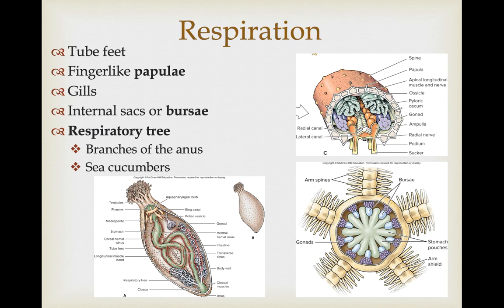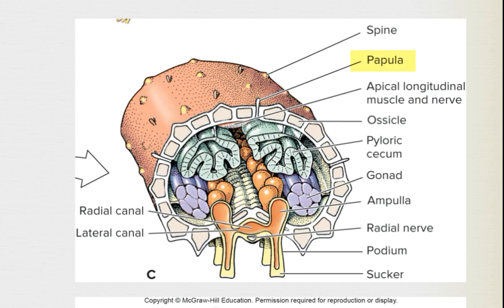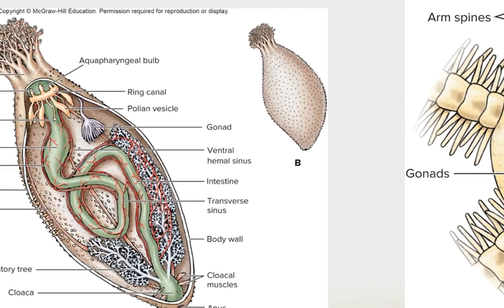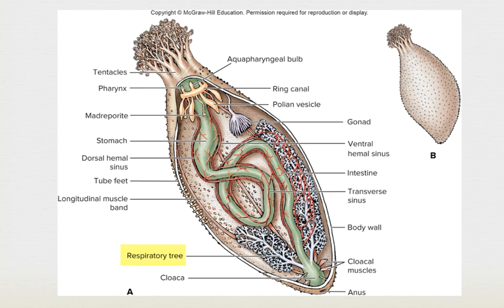They have a diversity of gas exchange methods. The tube feet themselves can be used for gas exchange given their large surface area. Finger-like papulae, sometimes referred to as skin gills sticking out the top of the epidermis, can also be used. Brittle stars have internal sacs or bursae where they bring in water through external openings for gas exchange. Sea cucumbers have a unique structure called the respiratory tree, which branches from the anus — they actually pump water in and out through the anus for gas exchange.